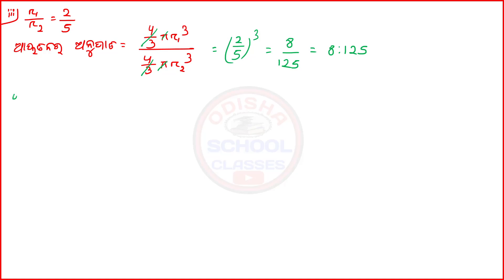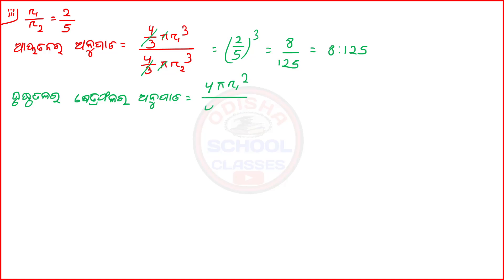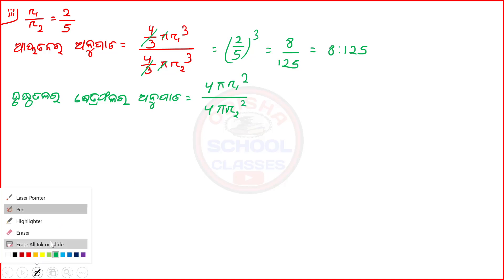The surface area formula. This is four pi r square. Four pi r square. See, how many times do we do this?